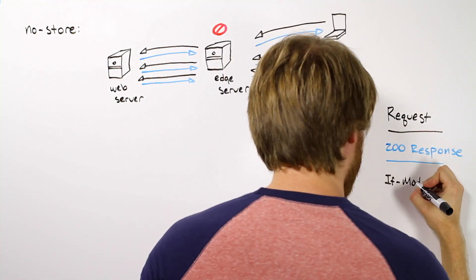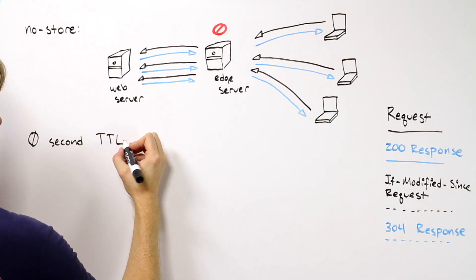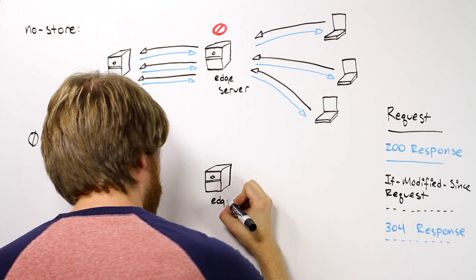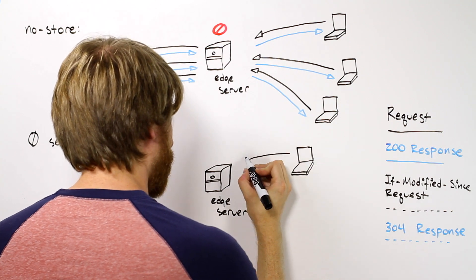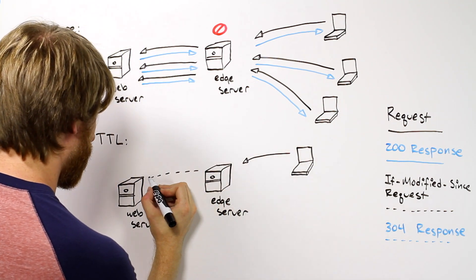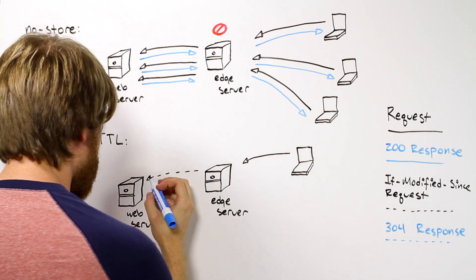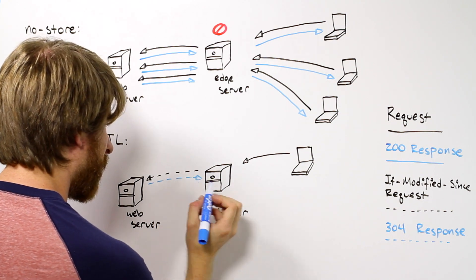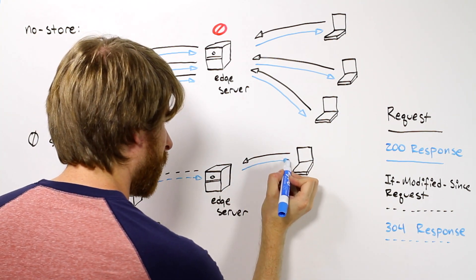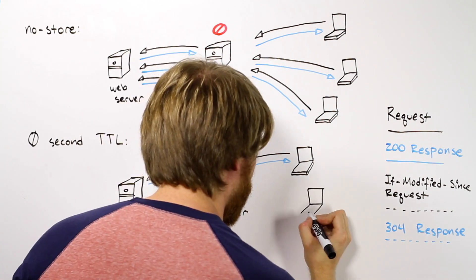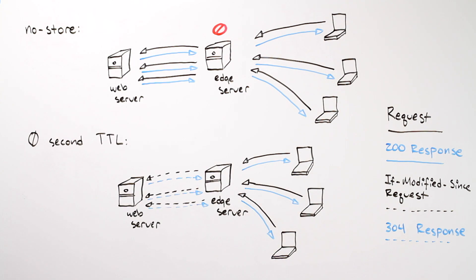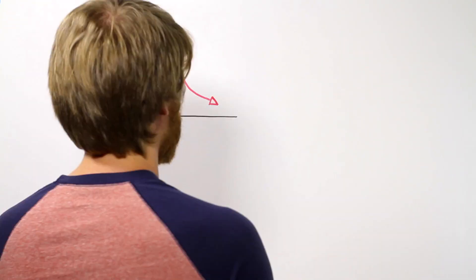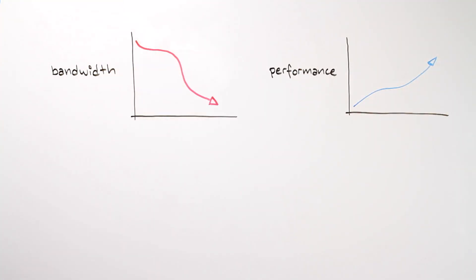This doesn't have to be the case. Having a zero-second TTL will allow the edge server to cache your file and in turn validate if the file has changed with your web server. This is done by including an if-modified since header in the request. If the file has not been modified, your web server will serve a 304 and the edge server will serve the file from cache. This means your web server doesn't have to serve the full payload. While every request is still going to your web server, the bandwidth required from your web server is much less and the performance for the end user is much improved.